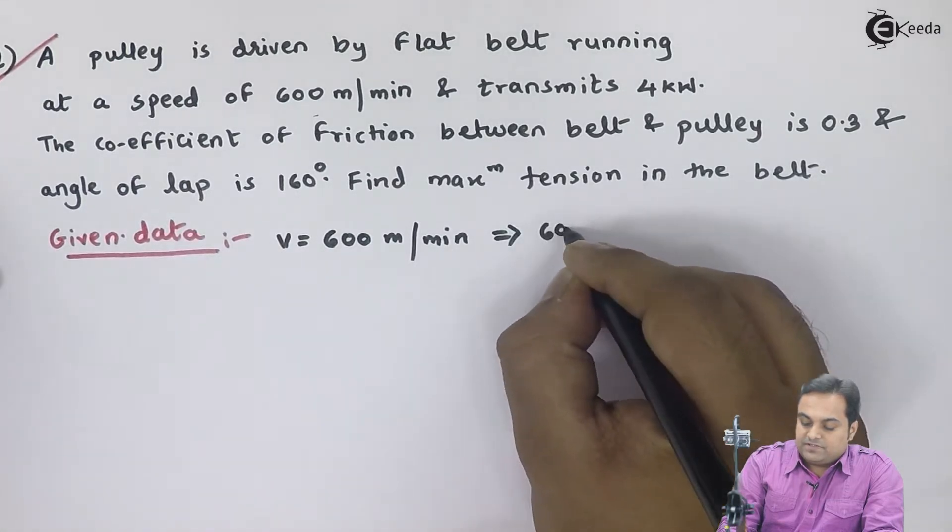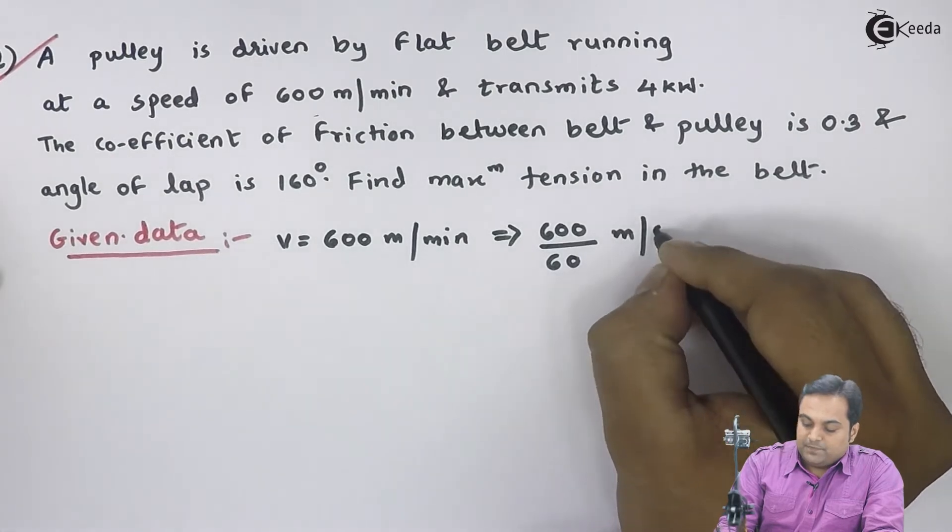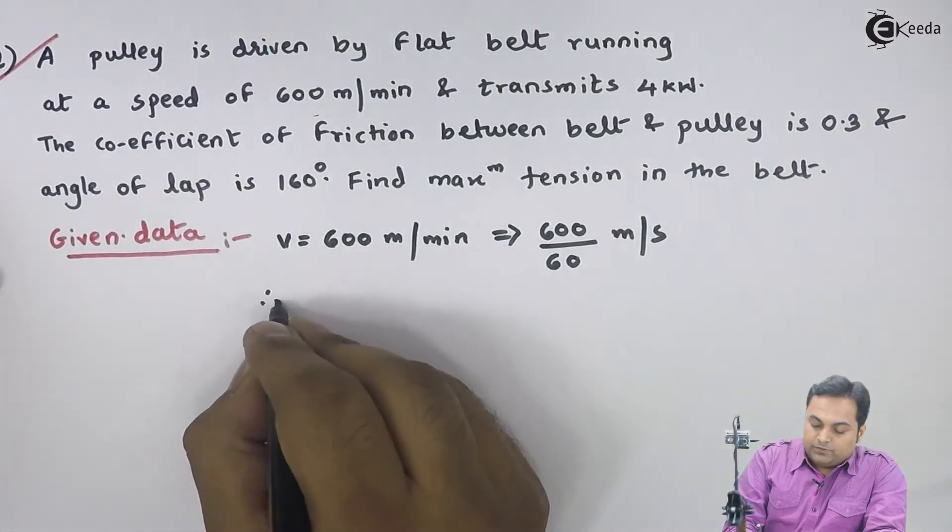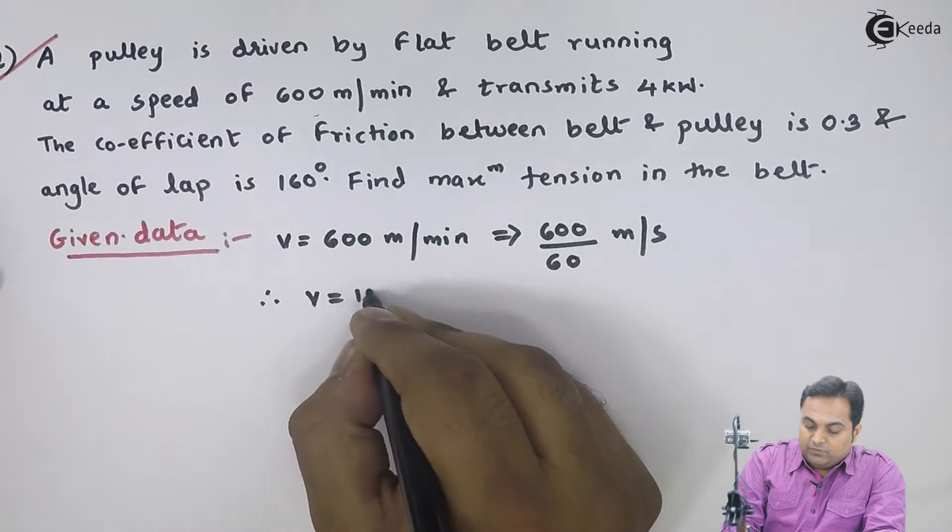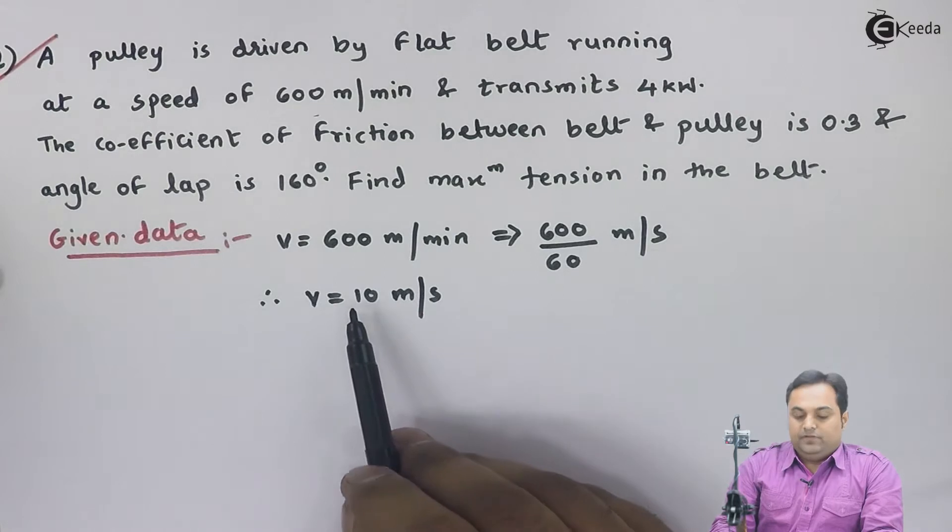This becomes 600 divided by 60 meters per second. Therefore, V is equal to 10 meters per second. This is the linear velocity of the belt.